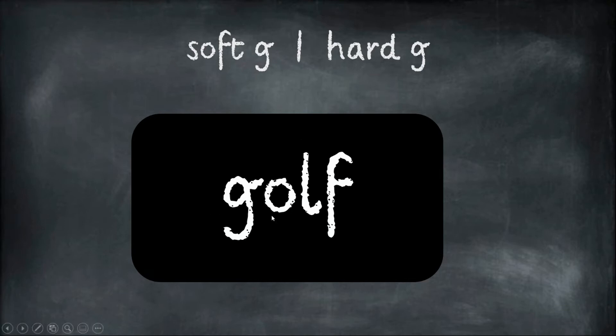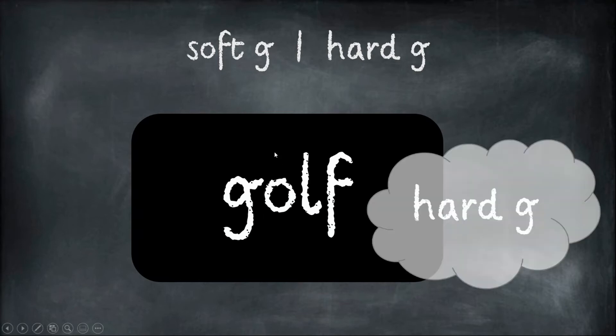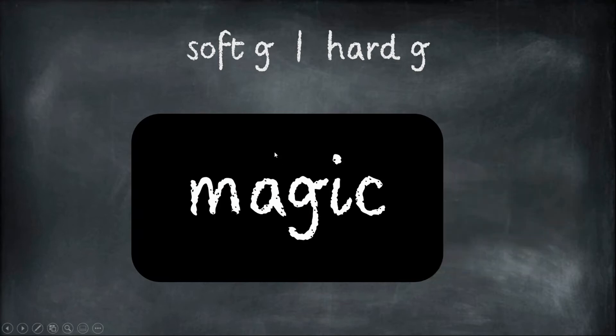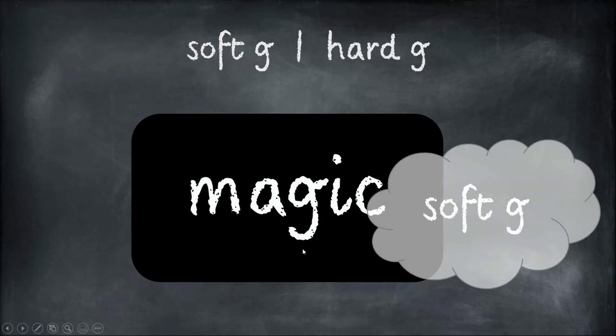Golf: g-o-l-f. That's it, the hard G. Here's the word magic: m-a-j-i-c. What sound is the G saying? It's saying J. Soft G.